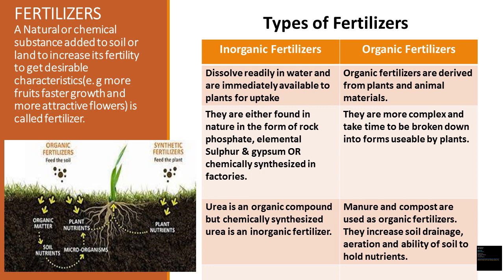Examples of organic fertilizers are manure and compost. They increase soil drainage, aeration, and the soil's ability to hold nutrients. When we use organic fertilizers, they increase soil fertility, which is good for the soil. Inorganic fertilizers are beneficial for plants because they dissolve readily and are absorbed quickly, but they do not increase soil fertility. Organic fertilizers improve the soil's capacity to hold water and nutrients, releasing them as needed by the plant. They also feed microorganisms like bacteria that live inside the soil, which in turn make nutrients available to plants and improve soil structure.